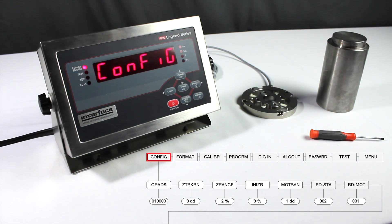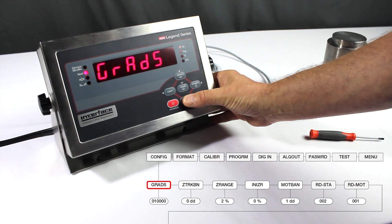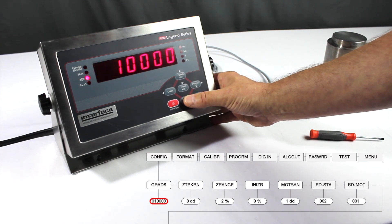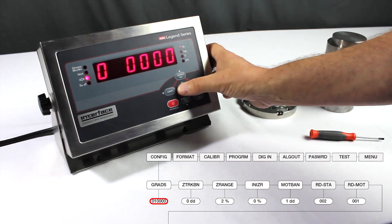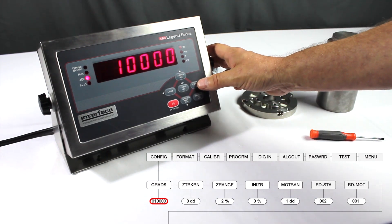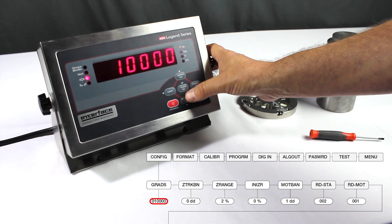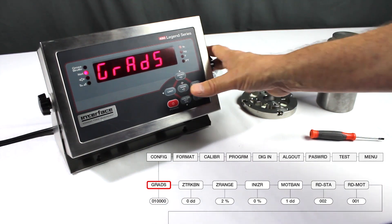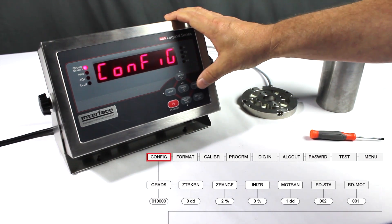So the first thing we're going to do is set up the number of graduations. We're going to use the down arrow key. It says grads, and then one more down. We're going to enter a number here. We use the left and right key and the up and down key to change the digits. In this case, we're going to have 10,000 graduations. In other words, 10,000 internal divisions on our calibration. Once we've done this, we hit the tare key, which is the enter, and it moves us back up to grads.